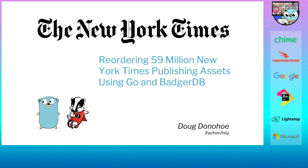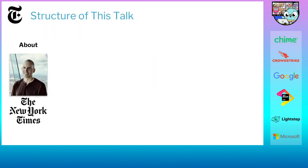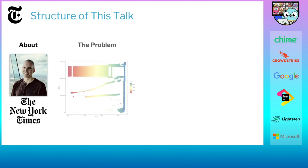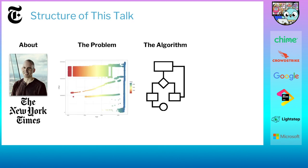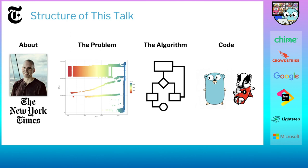Hello GopherCon and welcome to my talk. I'm Doug Donahoe. I'm from the New York Times and I'm going to be talking about how we use Go and BadgerDB to solve one of the problems we are working on. The structure of this talk is: I'll introduce myself and the New York Times first, then describe the problem we were having, then the algorithm we conceived to solve that problem, and then I'll share some lessons I learned writing this solution in Go using BadgerDB.